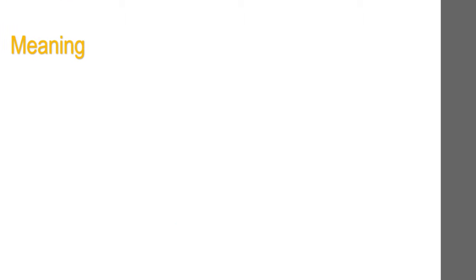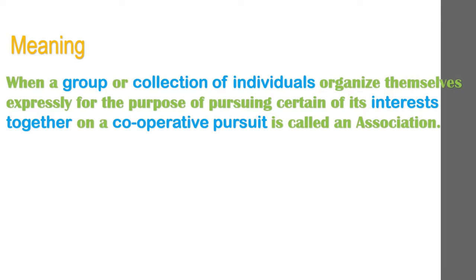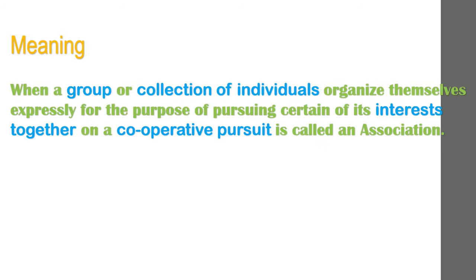Meaning of association: When a group or collection of individuals organizes themselves expressly for the purpose of pursuing certain interests together in a cooperative pursuit, it is called an association. A group of people who come together to achieve any particular purpose or goal, and that too for a limited period of time. An association is different from a normal group or team because it is formal in nature.